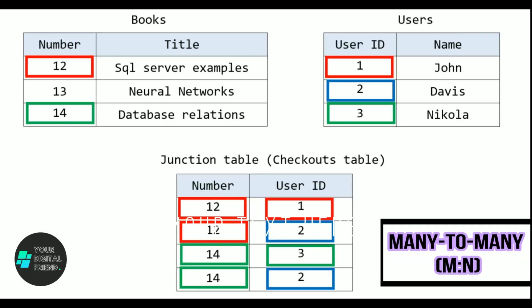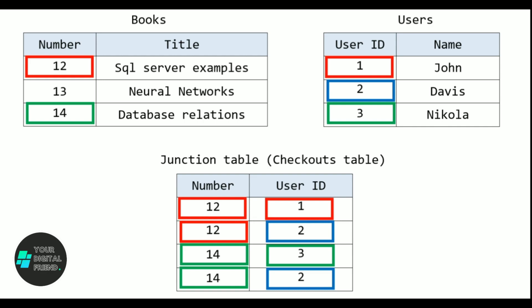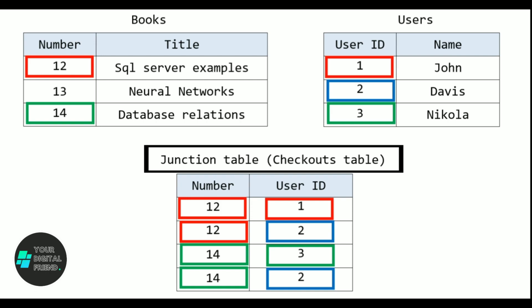Many-to-many relationship. A many-to-many relationship exists when many records in one table correspond to many records in another table. The books table might contain columns for the book's number and title, and the users table might contain columns for the user's name and user ID. To represent the many-to-many relationship between books and users, you would create a third table, often called a junction table, that maps the relationship between the two original tables.